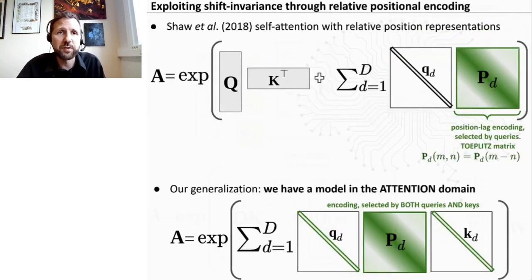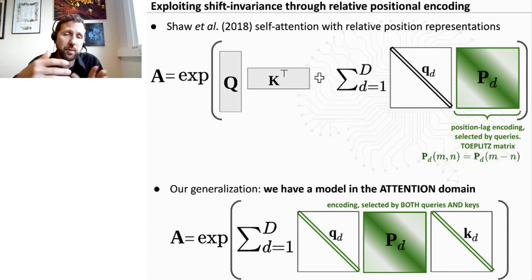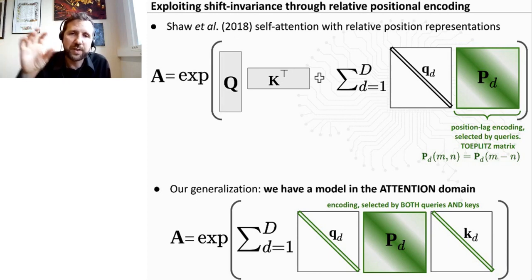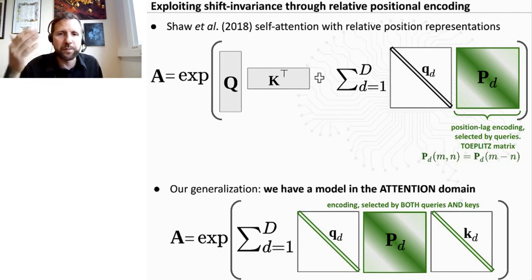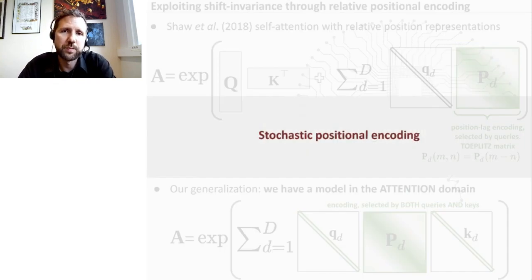And if you want to write the math about this, so this model by Shaw et al. in 2018, so the way it's done is that the attention is the sum of the query keys dot product plus the sum of a few terms that are shift invariant kernels that you are training, this PD activated by the queries. So in our paper, we are slightly generalizing this to another formulation where these shift invariant kernels, these Toeplitz matrices that are dependent M minus N, they are activated by both queries and keys. And you can actually show that this generalizes the initial model when you keep some entries equal to one, for instance. So this is the model we are considering for attention.